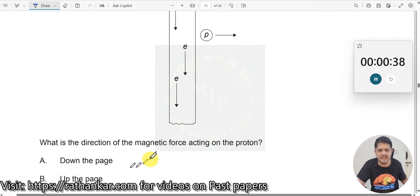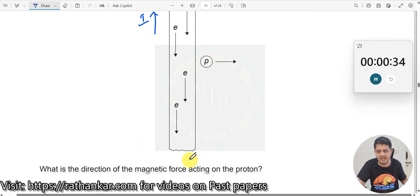And then, what is the direction of the magnetic force acting on the proton? Direction of the magnetic force. Now, how do we do? Where is the magnetic force here?